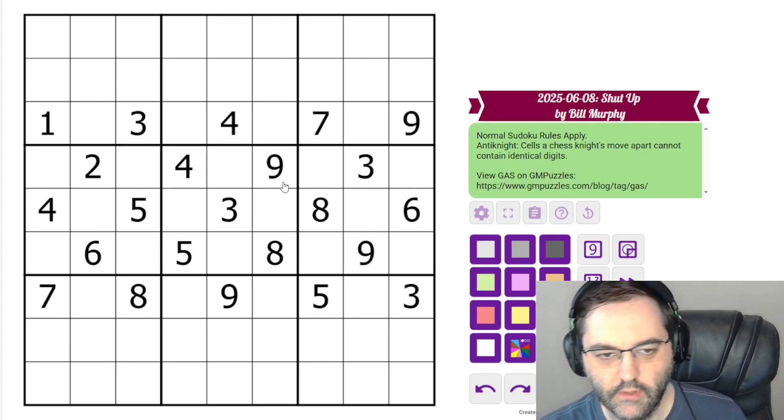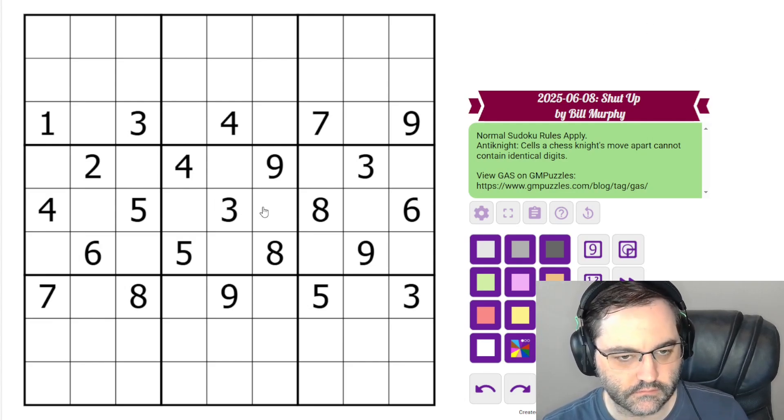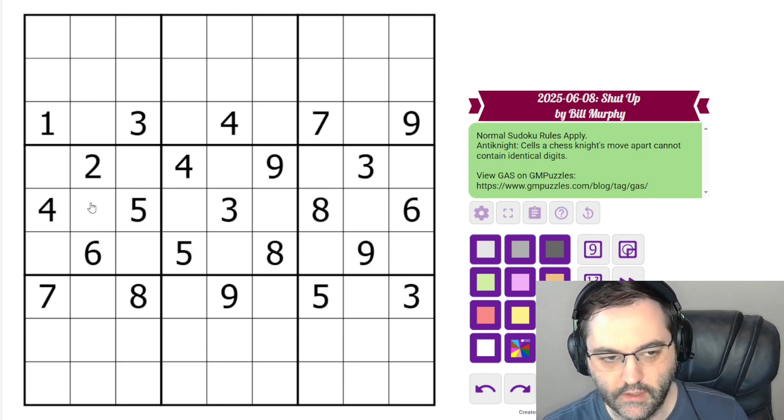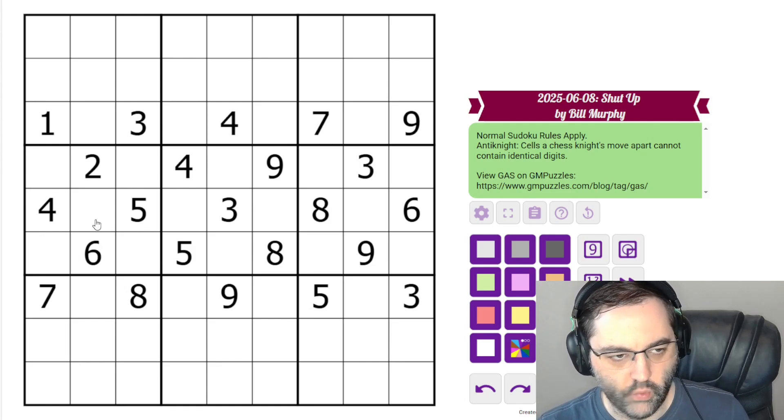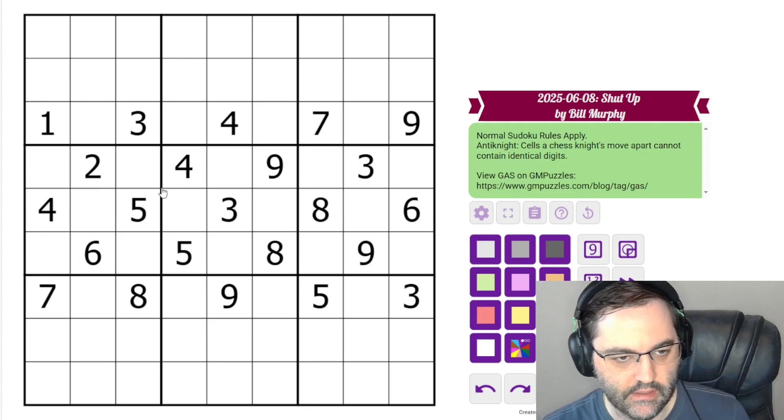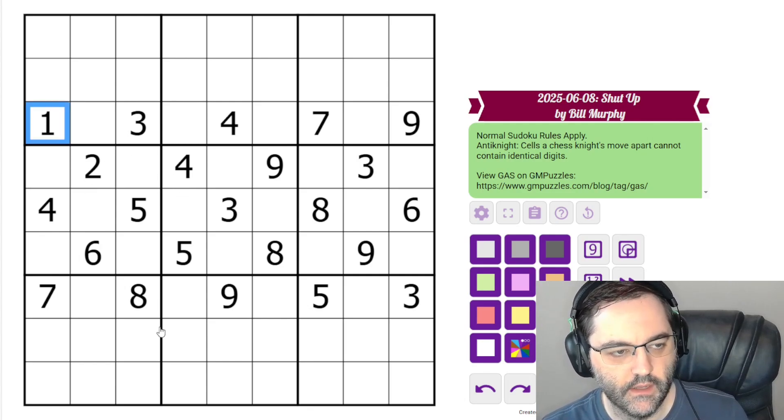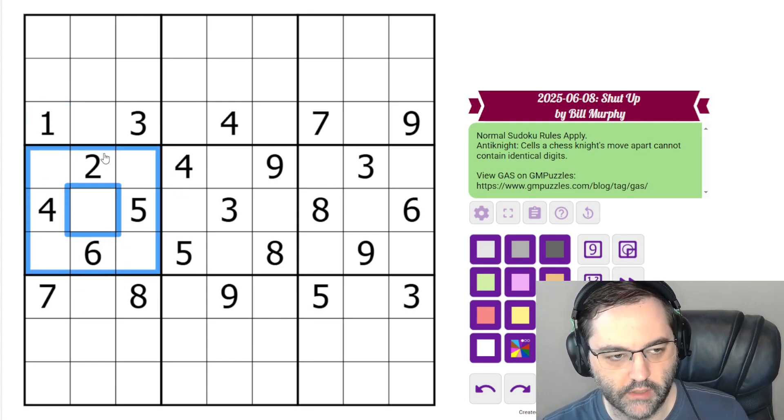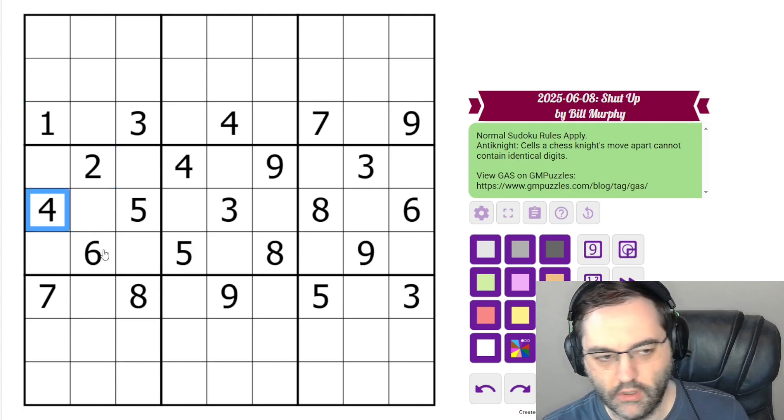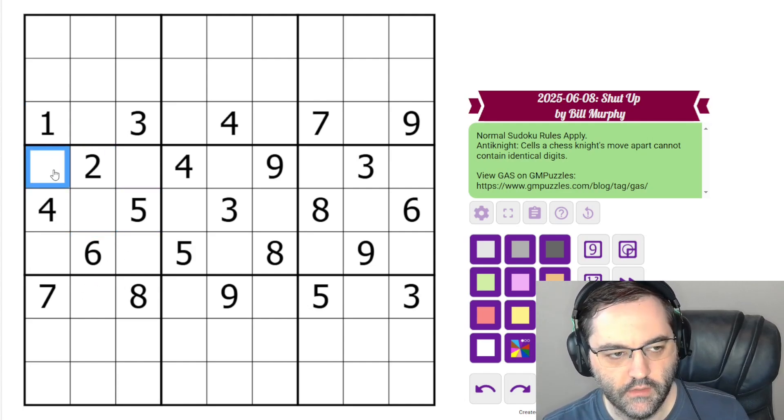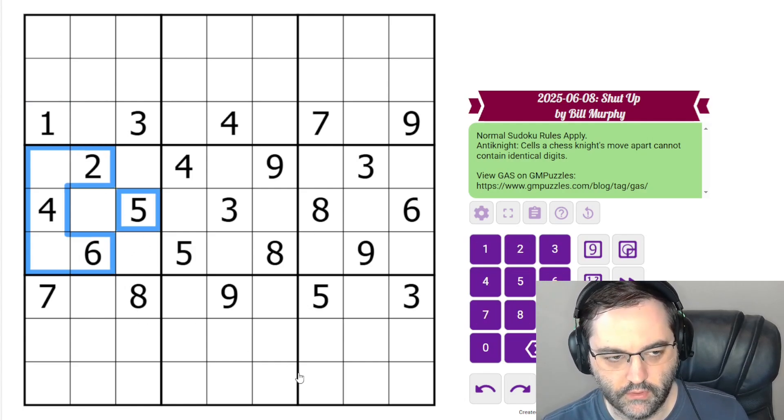We're going to get started in the middle. Bill's given us a lot of digits in this nice checkerboard pattern. And he set up something very nice on this side of the grid in particular to start with. We can see this a couple of different ways, but I'm going to look at it in the hidden single sort of way.